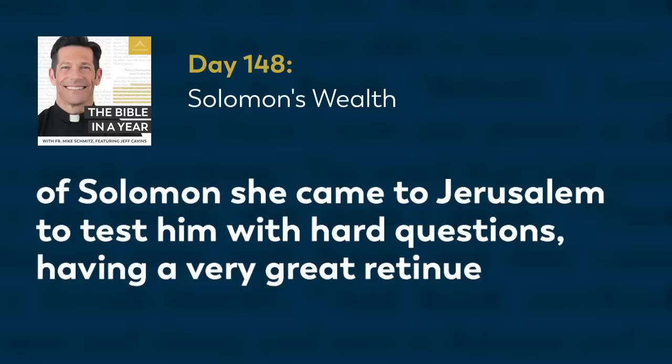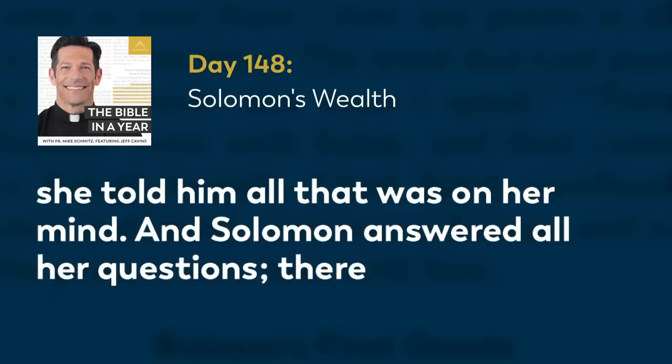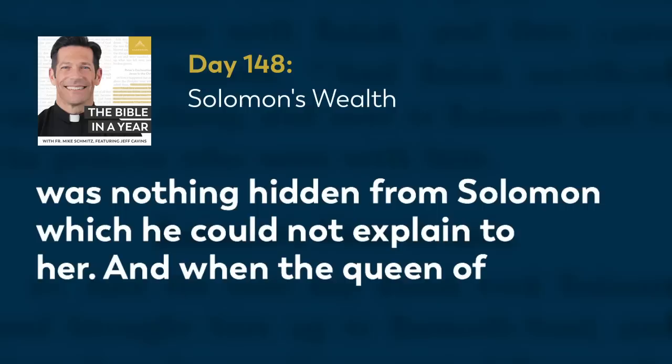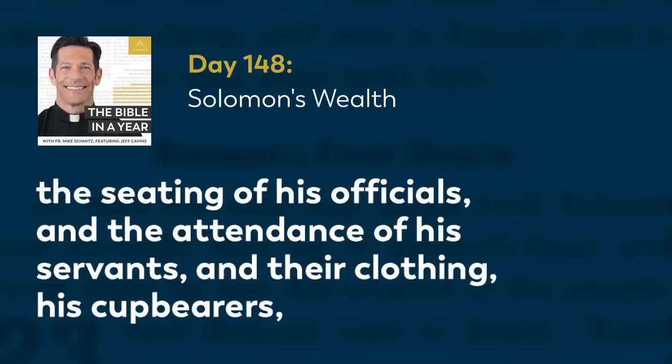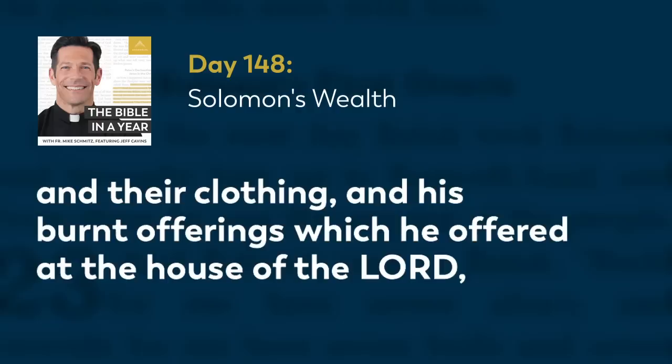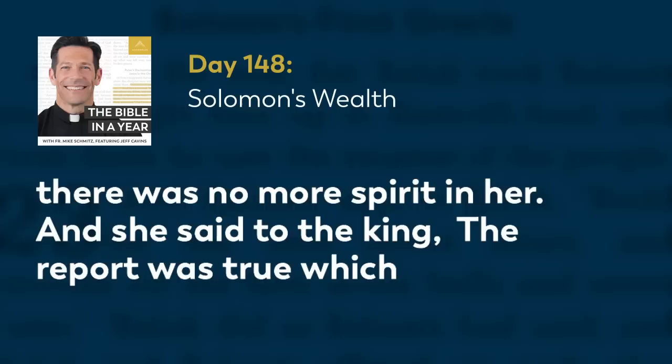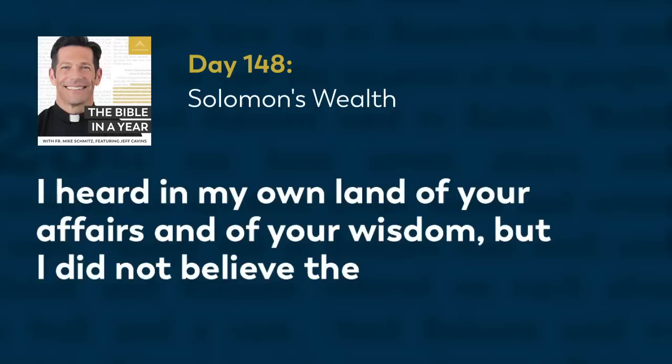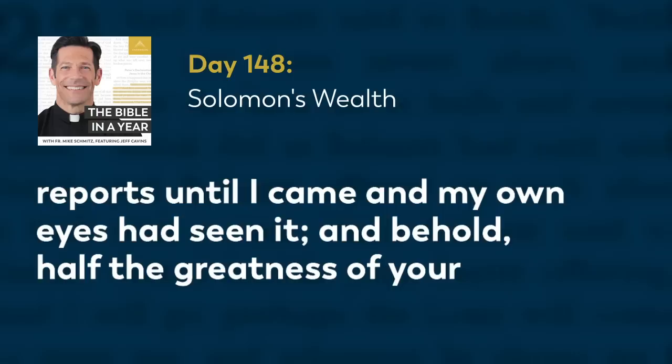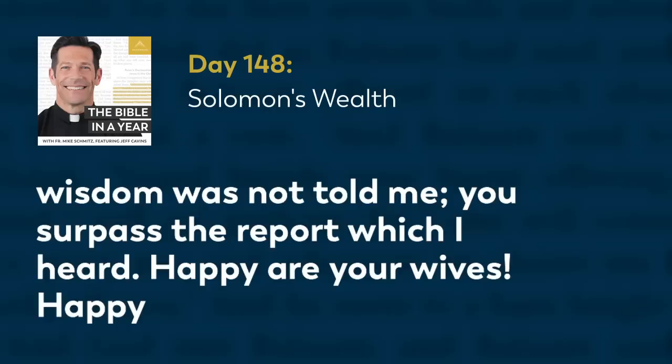Now when the queen of Sheba heard of the fame of Solomon, she came to Jerusalem to test him with hard questions, having a very great retinue and camels bearing spices and very much gold and precious stones. When she came to Solomon, she told him all that was on her mind. And Solomon answered all her questions — there was nothing hidden from Solomon which he could not explain to her. And when the queen of Sheba had seen the wisdom of Solomon, the house that he had built, the food of his table, the seatings of his officials, the attendance of his servants and their clothing, his cupbearers and their clothing, and his burnt offerings which he offered at the house of the Lord, there was no more spirit in her. And she said to the king, 'The report was true which I heard in my own land of your affairs and of your wisdom. But I did not believe the reports until I came and my own eyes had seen it. Behold, half the greatness of your wisdom was not told me — you surpassed the report which I heard.'